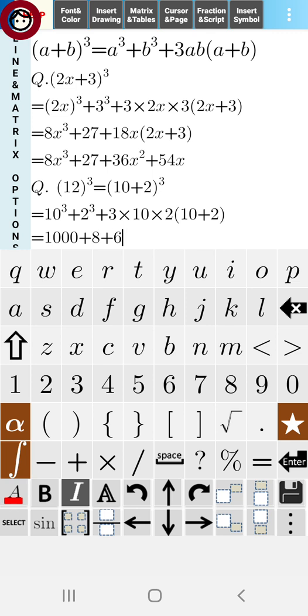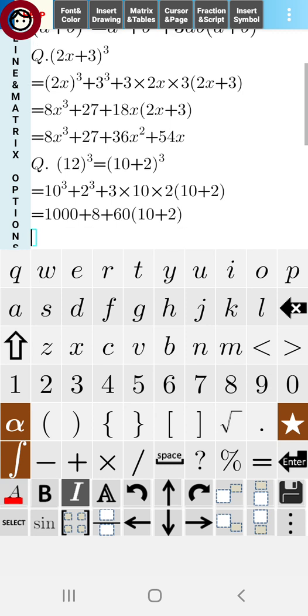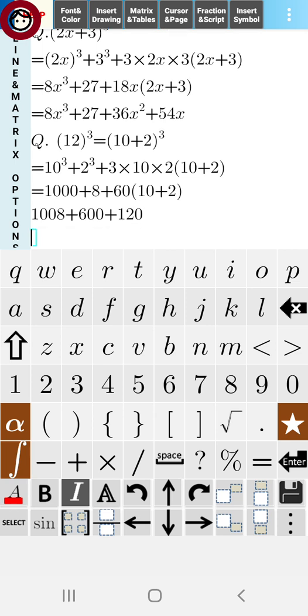We have 1008 plus 60·10 is 600 plus 60·2 is 120. Now we will add them and we will get 1728.